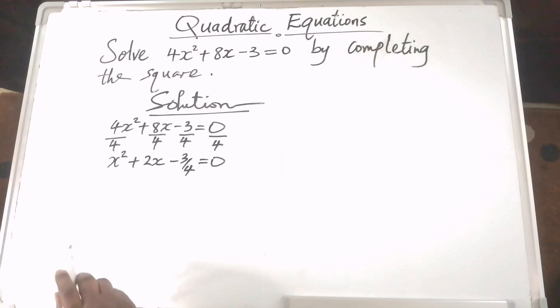We want to complete the square starting with x squared plus 2x. We are going to take 3 over 4 to the other side of the equation, so we have x squared plus 2x is equal to 3 over 4 when we add 3 over 4 to both sides.